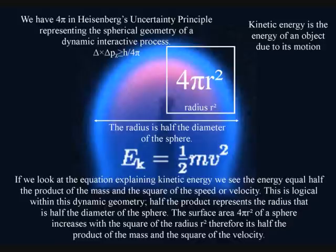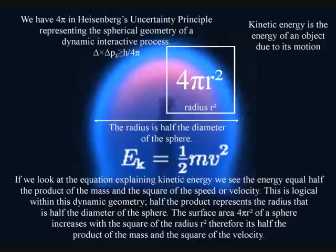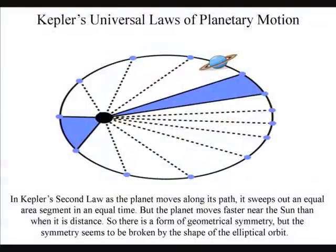The same mathematics representing a geometrical process can also be seen in Kepler's universal laws of planetary motion. In Kepler's second law as the planet moves along its path, it sweeps out an equal area segment in an equal time. But the planet moves faster near the sun than when it is distant. So there is a form of geometrical symmetry, but the symmetry seems to be broken by the shape of the elliptical orbit.